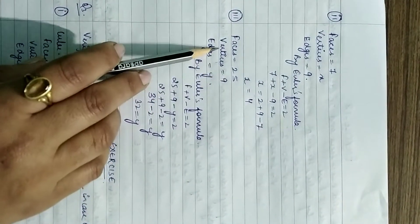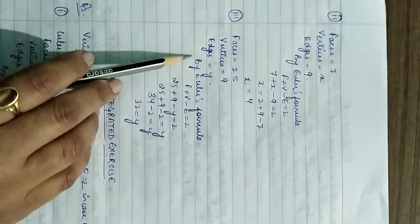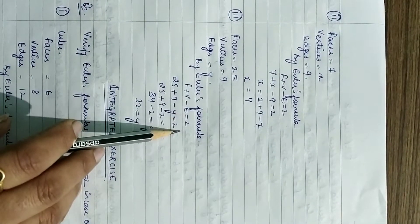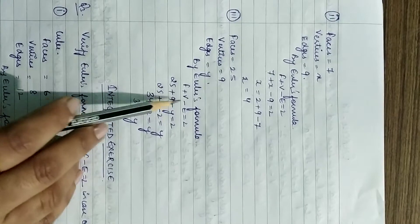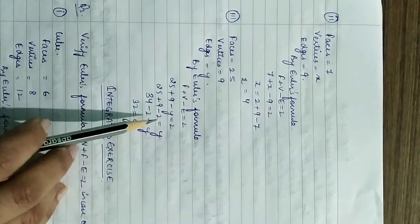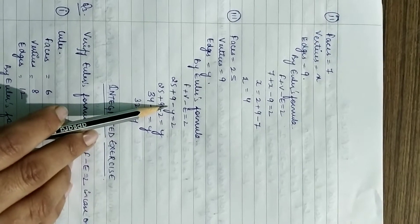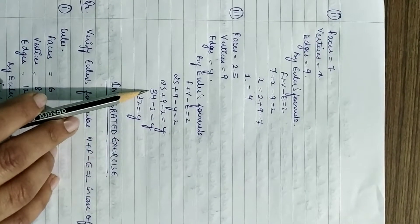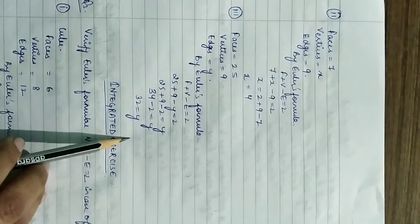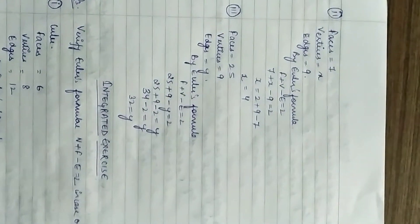Third part: faces = 25, vertices = 9, edges = y. By Euler's formula: 25 + 9 − y = 2. Shifting y to the left and 2 to the right: y = 34 − 2 = 32. The last part you can do easily on your own.